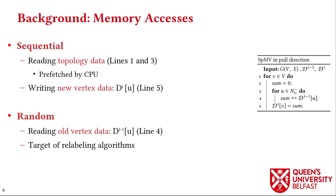In graph processing algorithms such as SPMV, we have two types of memory accesses: sequential memory accesses for reading topology data in lines one and three of SPMV pull, and for writing new vertex data in line five; and random memory accesses in line four for reading all vertex data. Random memory accesses are the main target of reordering algorithms to provide better locality and accelerate execution.